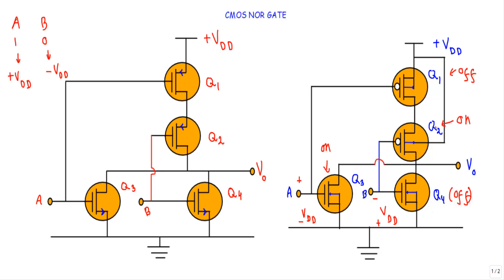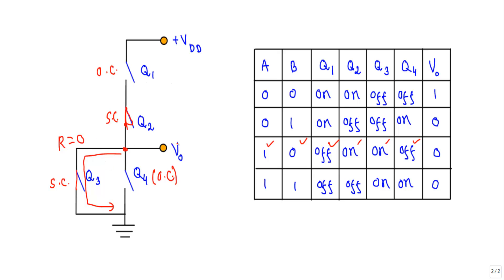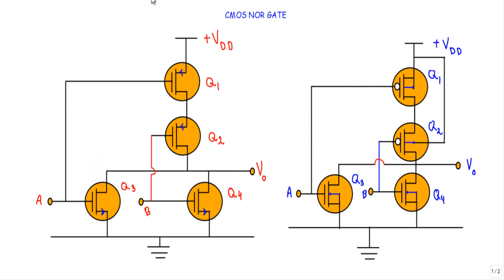For input 1,0: Q1 and Q4 are OFF, Q2 and Q3 are ON. Replacing: Q1 = open circuit, Q2 = short circuit, Q3 = short circuit, Q4 = open circuit. There is a complete short path from the output terminal to ground through Q2 and Q3. The resistance in this path is zero, so by Ohm's law the output voltage is zero — logic 0.